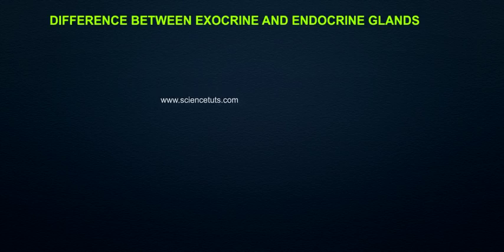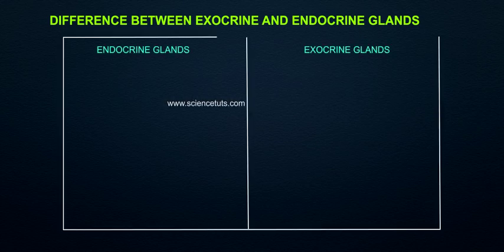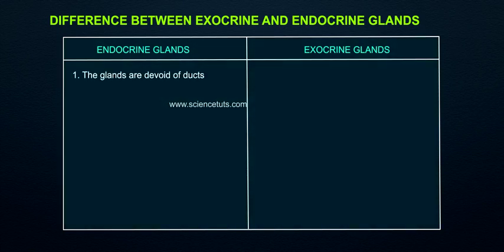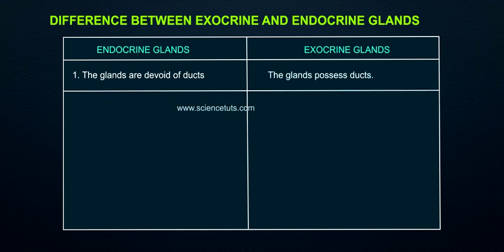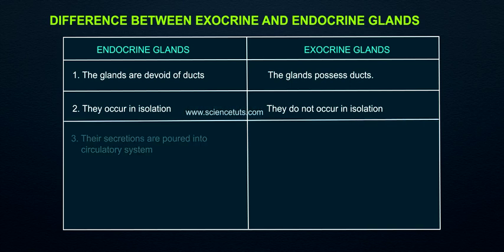Difference between exocrine and endocrine glands. Point 1: Endocrine glands are devoid of ducts, whereas exocrine glands possess ducts. Point 2: Endocrine glands occur in isolation, whereas exocrine glands do not occur in isolation.